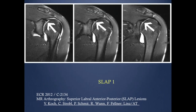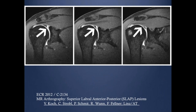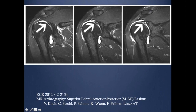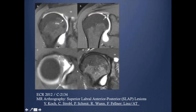I'll show you an example of each type. Type 1 shows irregular fraying of the superior labrum. Type 2 is when you have a linear signal — this is more than 3 mm detachment with a globular and irregular outline. Type 3 is when you have a separate fragment, which we call the bucket handle fragment. And Type 4 is when it extends to the bicipital anchor.